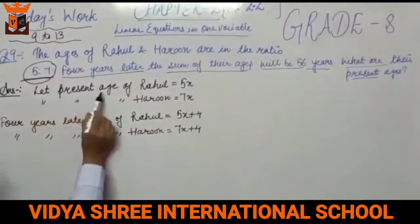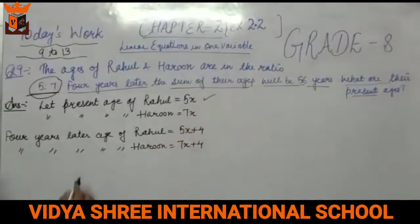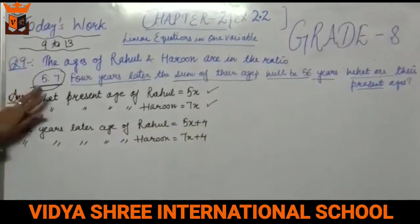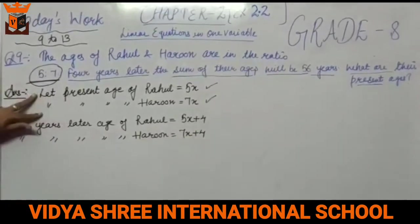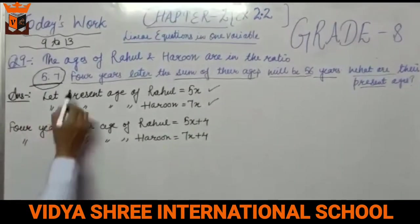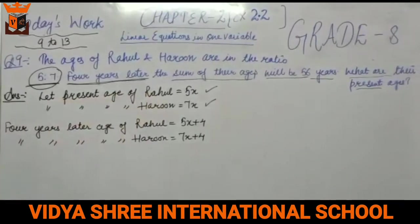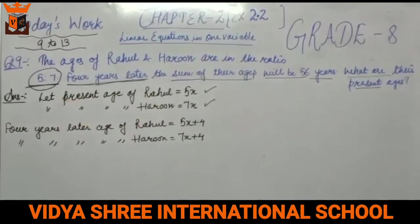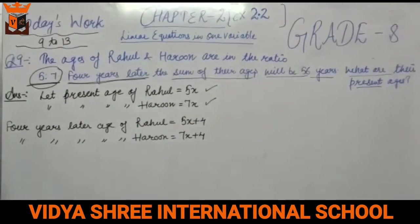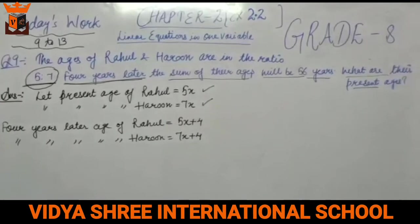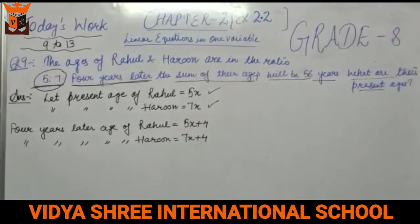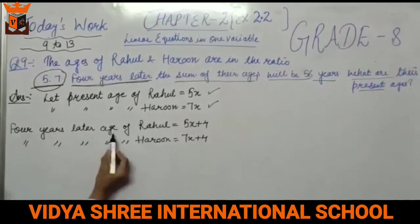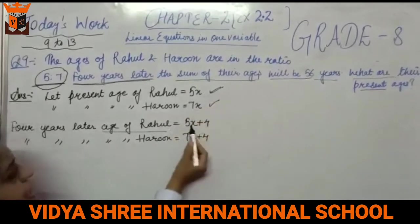Because we have the ratio given, we let the present age of Rahul be 5x and the present age of Harun be 7x. Now, for 4 years later — for example, if your age is 13, after 4 years it becomes 13 plus 4. So when we use the word 'later' or 'after', we add. So after 4 years, Rahul's age was 5x.